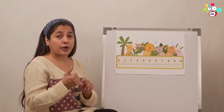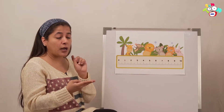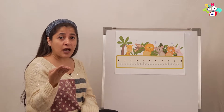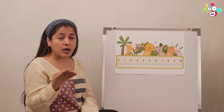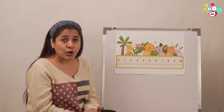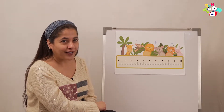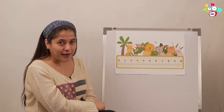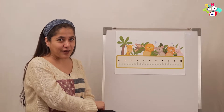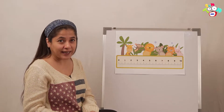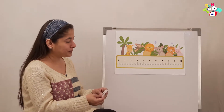So now you all know your descending order, backward counting, what comes before, what comes after, and what comes in between. So you should all know your missing numbers for sure. Are we ready for the game? I'm going to put two numbers and you have to tell me which number is missing.